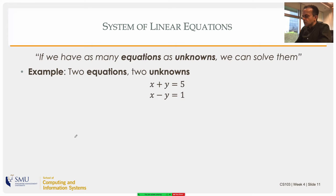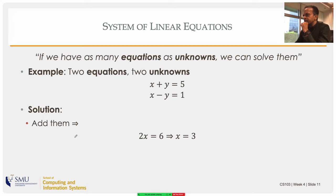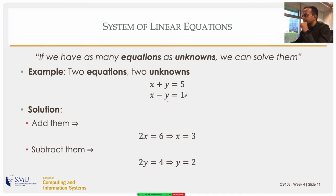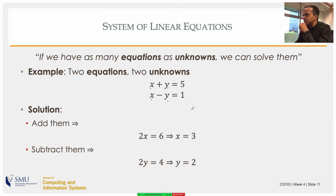So x plus y equals 5, x minus y equals 1 — a very simple set of equations. You can add the two equations: y and minus y cancel, giving 2x equals 6, so x equals 3. Subtracting them: 2y equals 4, so y equals 2. Very easy to solve — you wouldn't actually do this using Gaussian elimination, but it looks like you can solve two equations with two unknowns.